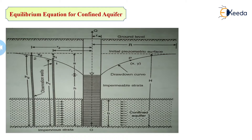Through this confining layer, the well is penetrated up to the impervious strata. Hence, this type of aquifer is known as a confined aquifer because the aquifer and the well are situated in between two layers — one is the confining layer and the second one is the impervious layer. Between these two layers, this is called a confined aquifer.